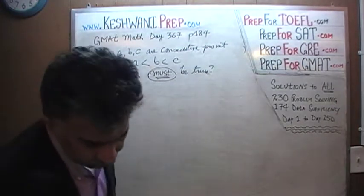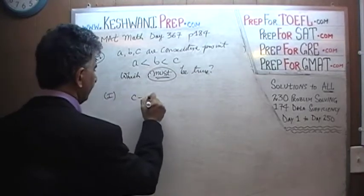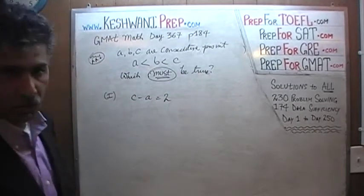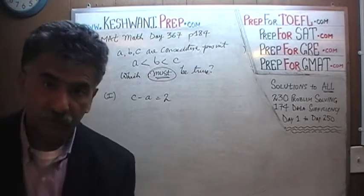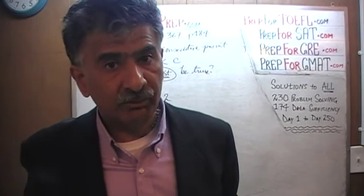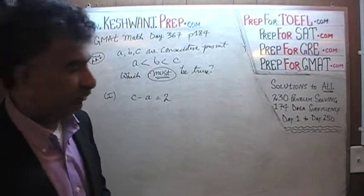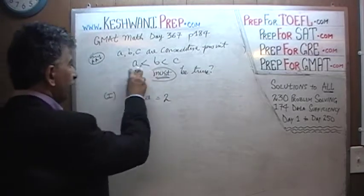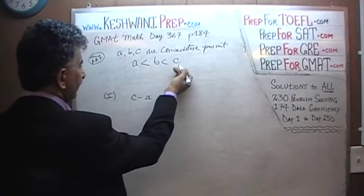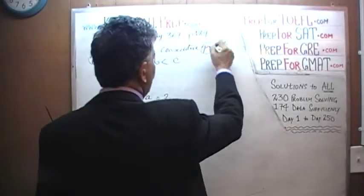The first statement says c minus a equals 2. Let's see if that's true. There are two ways to go about it: algebraically in a classical way, or by plugging in numbers. If you plug in numbers such that a is less than b which is less than c, contemplate two scenarios — starting with odd numbers like 3, 4, 5, and also with an even number like 4, 5, 6, just to cover all bases.